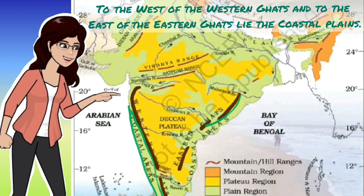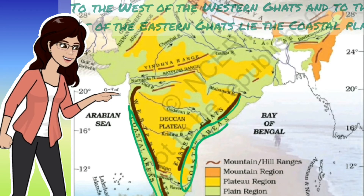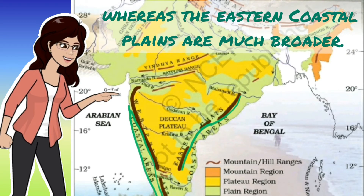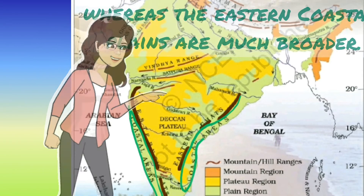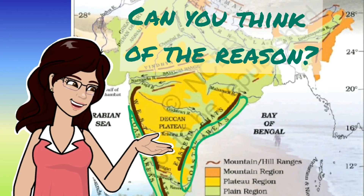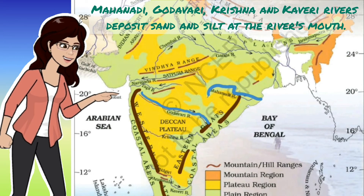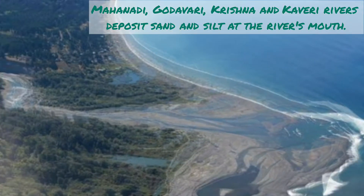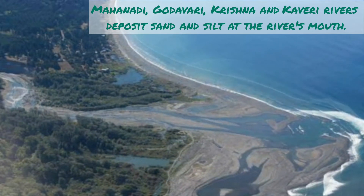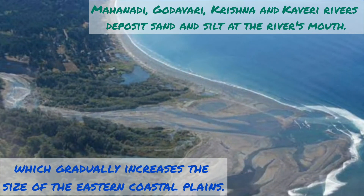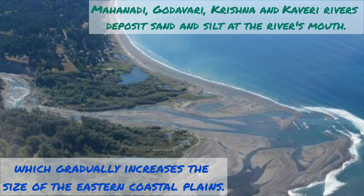To the west of the Western Ghats and to the east of the Eastern Ghats lie the coastal plains. The western coastal plains are very narrow, whereas the eastern coastal plains are much broader. Can you think of the reason? It is because the Mahanadi, Godavari, Krishna, and Kaveri rivers deposit sand and silt at the river's mouth, which gradually increases the size of the eastern coastal plains.